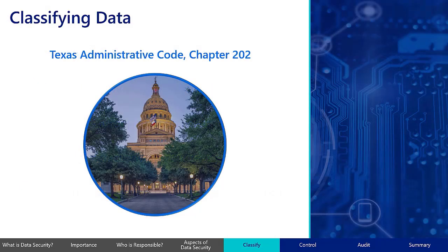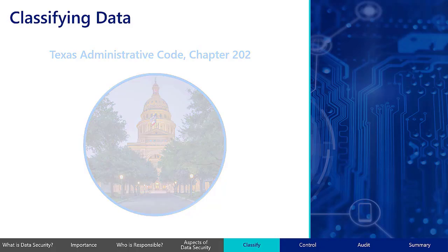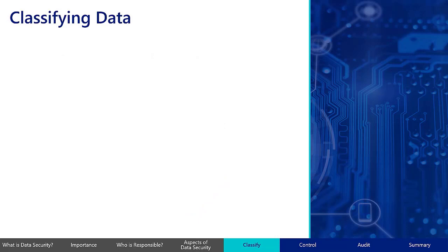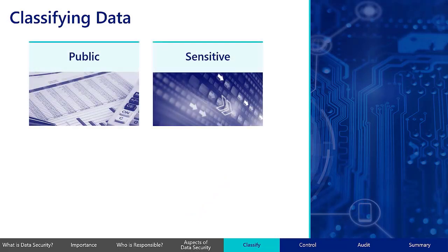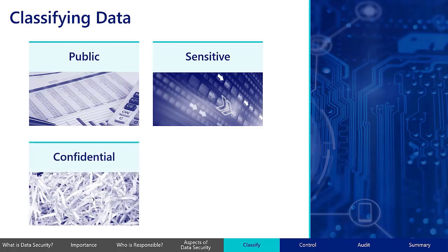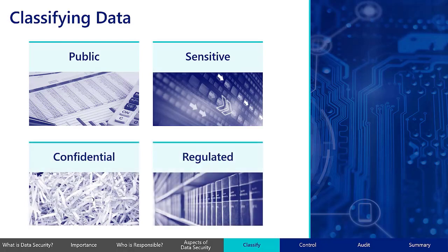In Texas, data classification follows standards that have been set by the legislature and managed through the Texas Administrative Code. Specific data classification terms can look unique to each organization, but generally organizations will categorize data into four types: public, sensitive, confidential, and regulated.